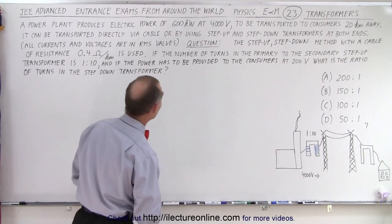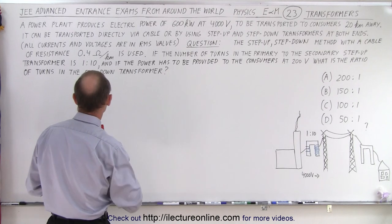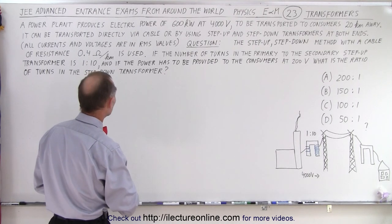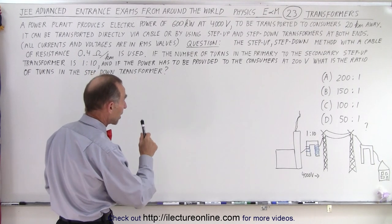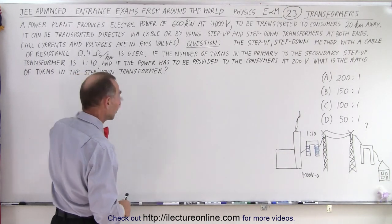So the question is: the step-up step-down method with a cable of resistance of 0.4 ohms per kilometer is used. If the number of turns in the primary to the secondary step-up transformer is 1 to 10...